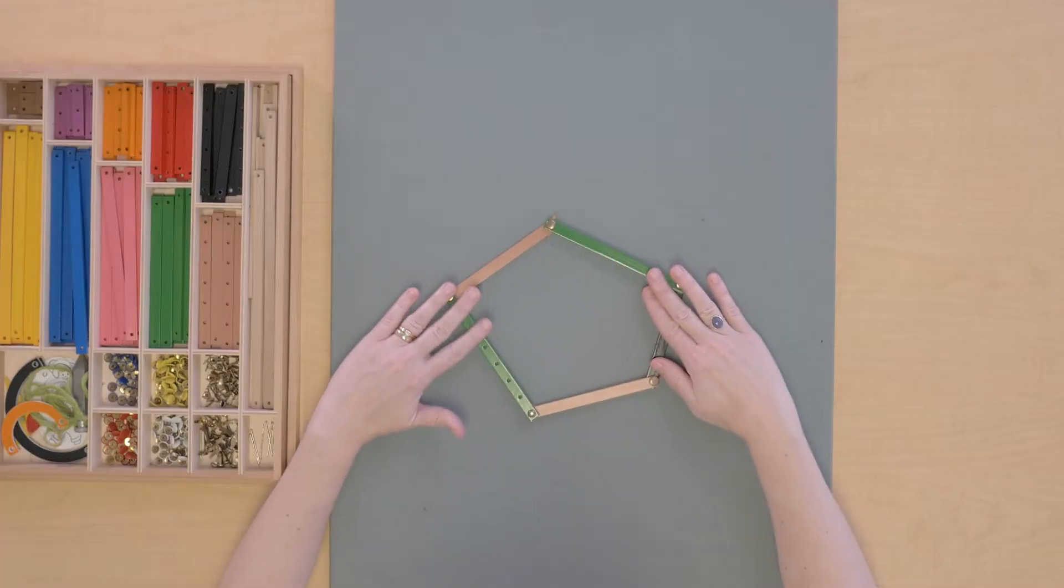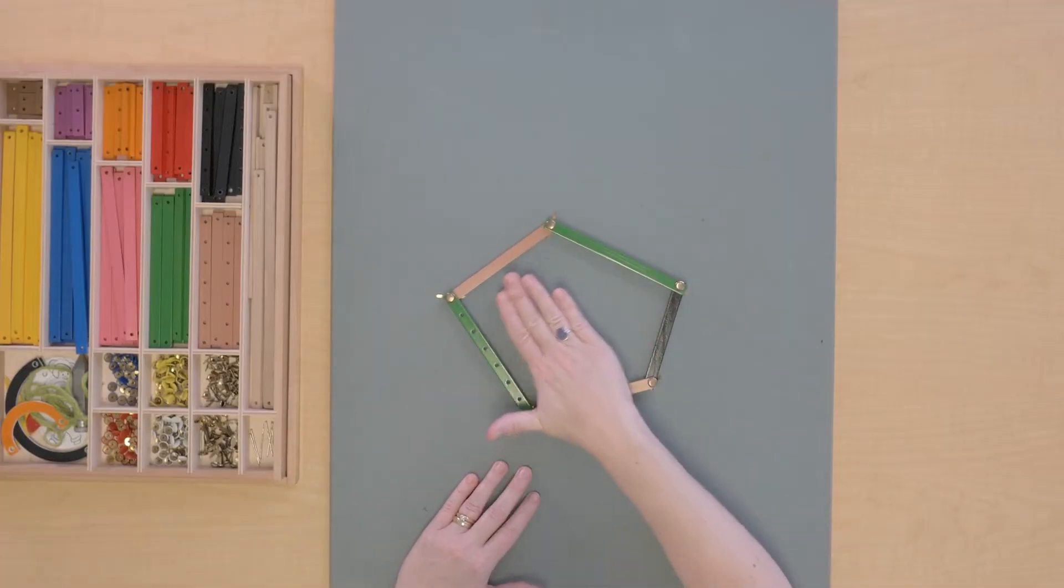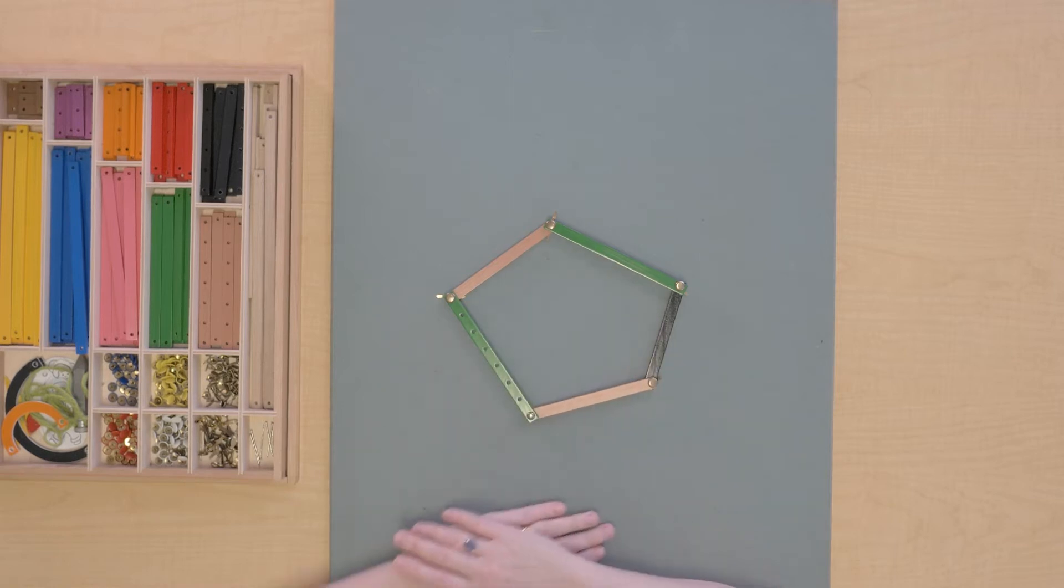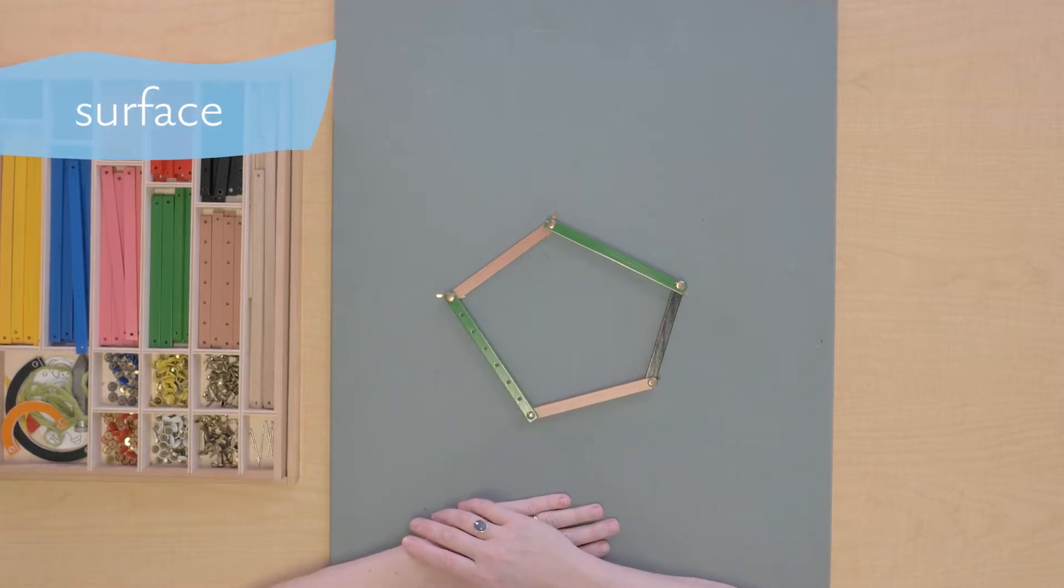Today I want to tell you about some of the different parts of polygons. So I have a polygon here and this flat space inside of the polygon, that's called the surface of the polygon.